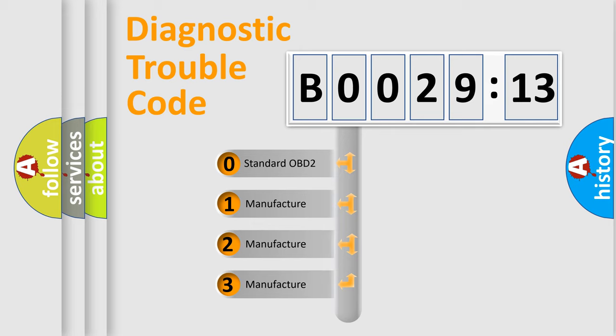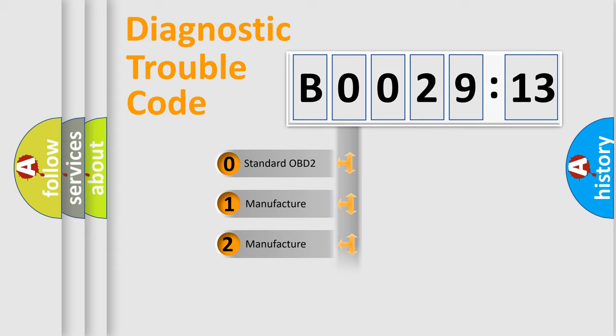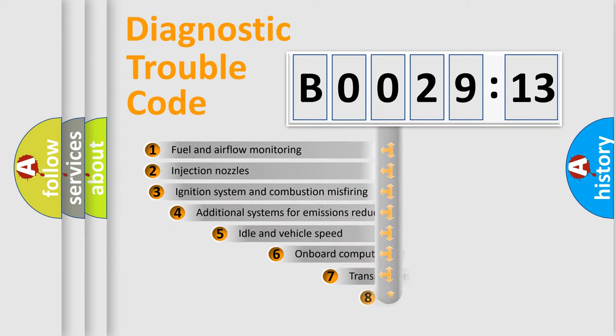If the second character is expressed as zero, it is a standardized error. In the case of numbers 1, 2, 3, it is a manufacturer-specific expression of the car-specific error.